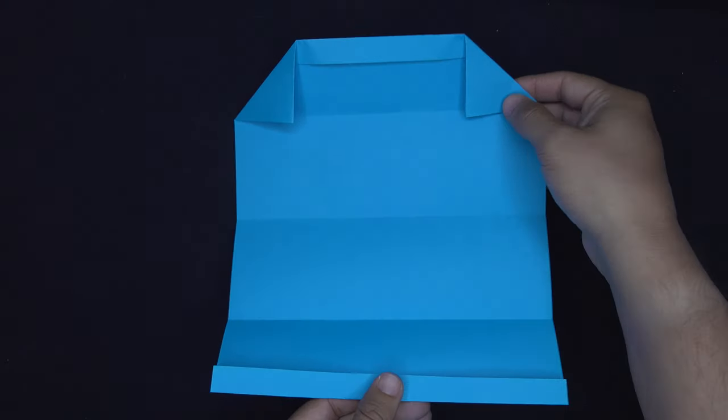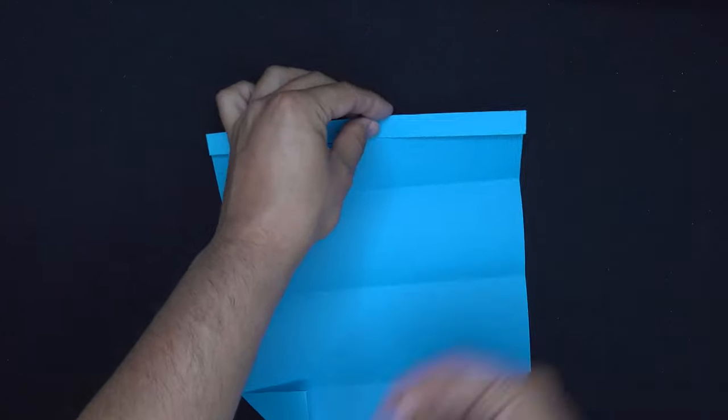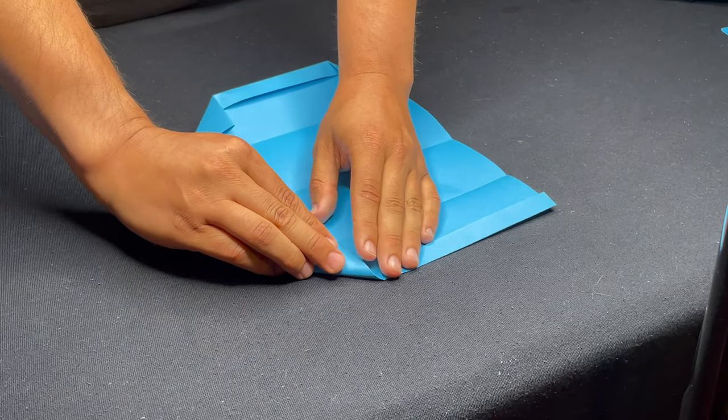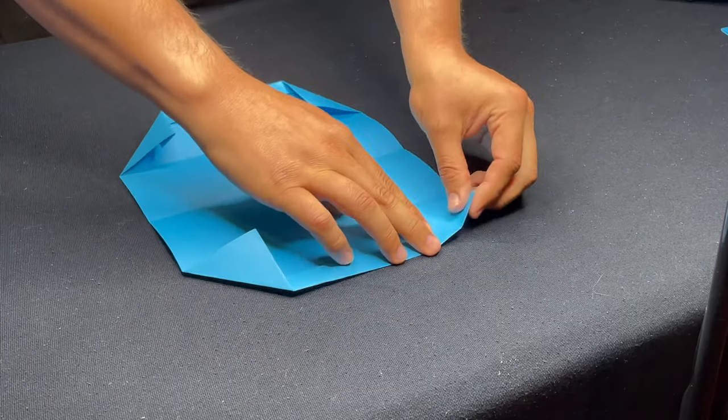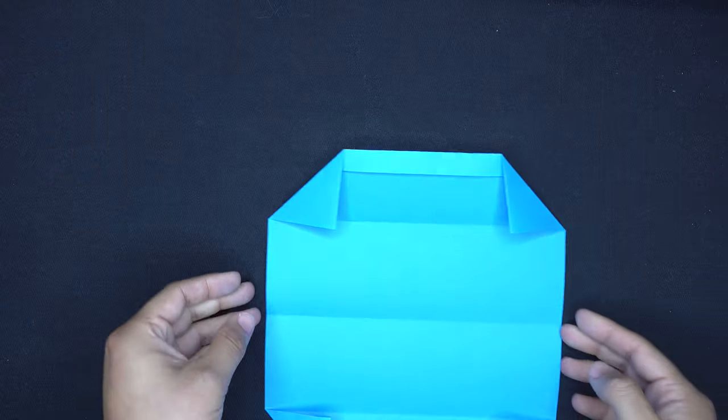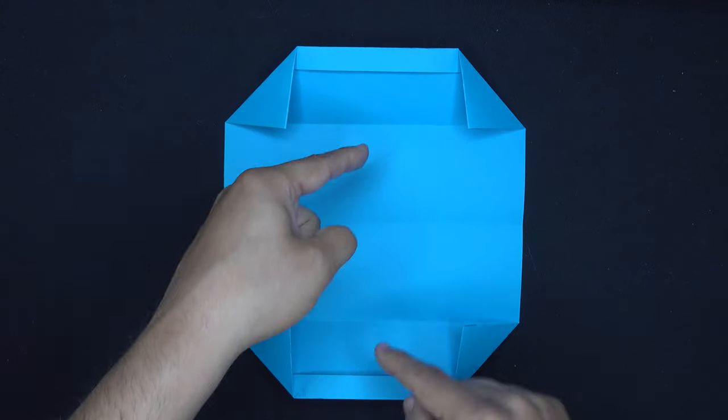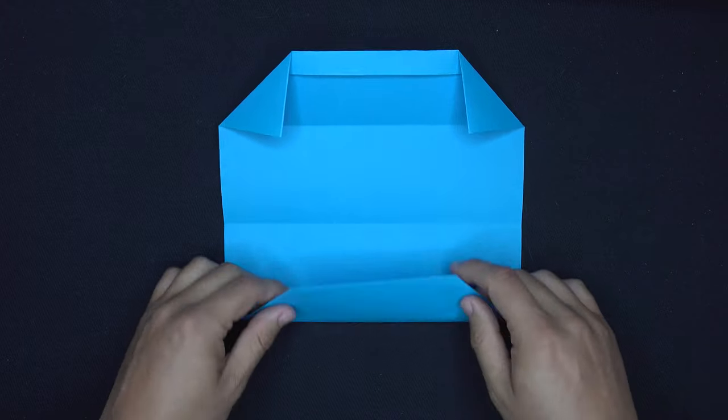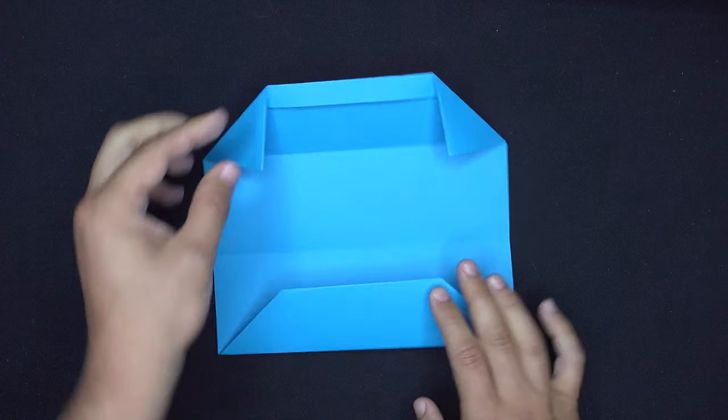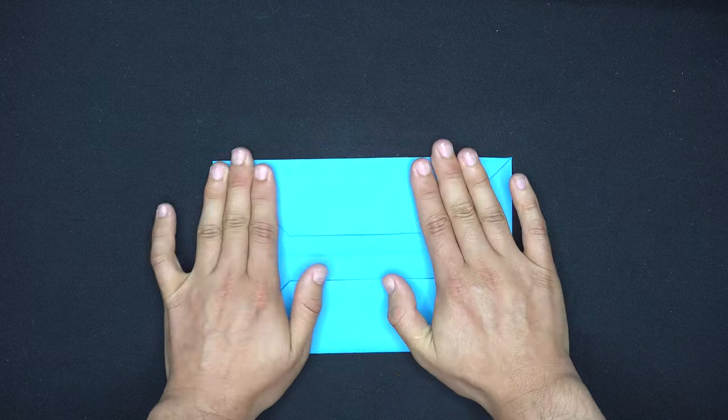Now we could flip it around and do the same on the other side. Airplane fold the two top corners inwards and make a nice sharp crease on top. Now we could take the top and bottom and fold them on this crease right here. Fold it and flatten it and then fold the top edge in and flatten it as well.